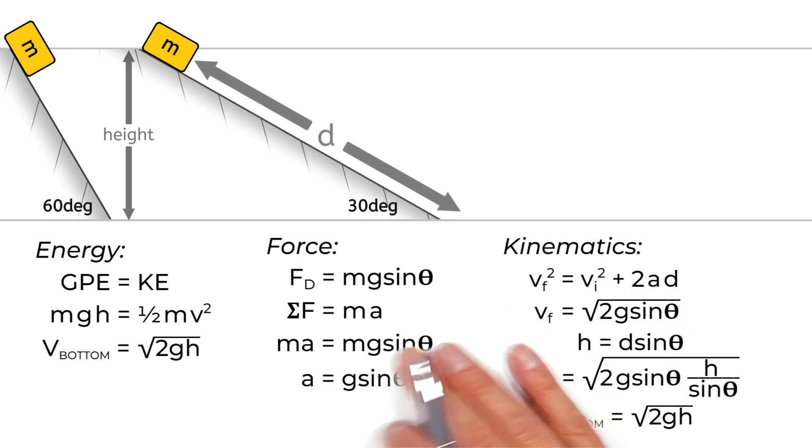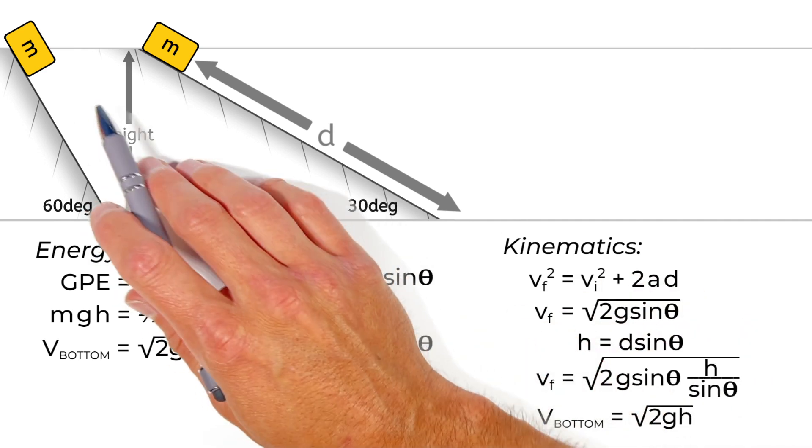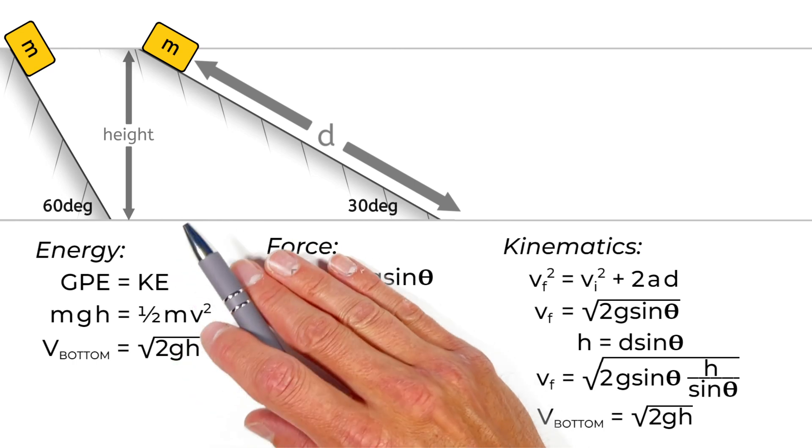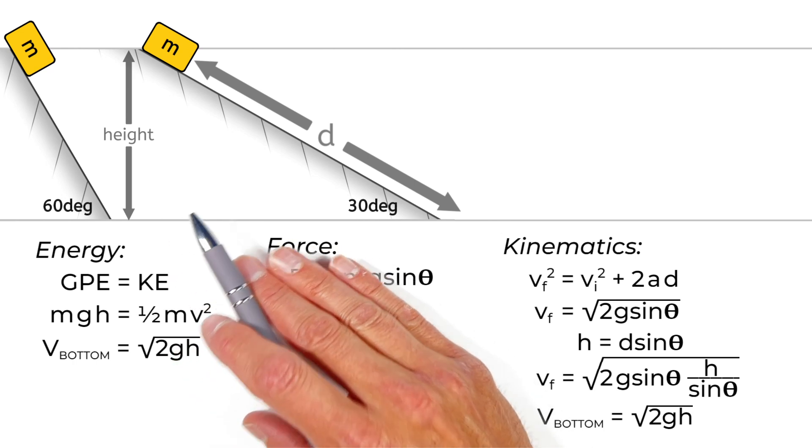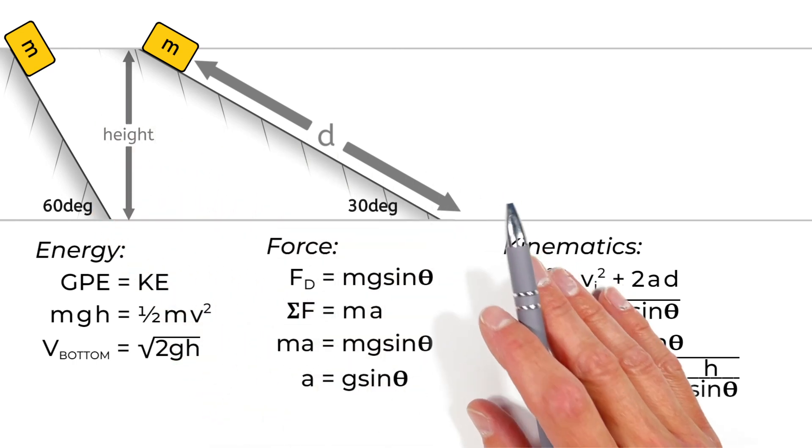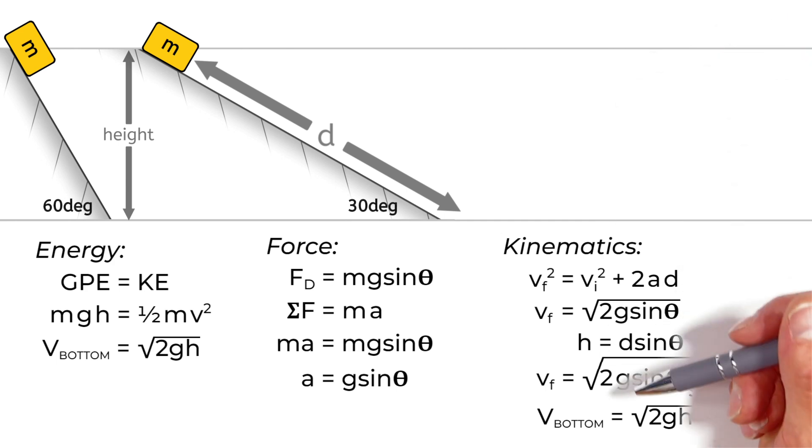But I like this force and kinematics explanation a little bit better because it takes into account the fact that, yes, the block speeds up more rapidly when on a steep hill, but it doesn't have to travel as far. So, I hope you found this useful. And on that note, that's all for now.